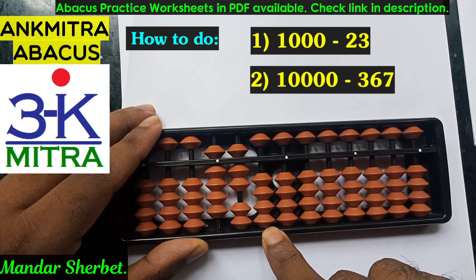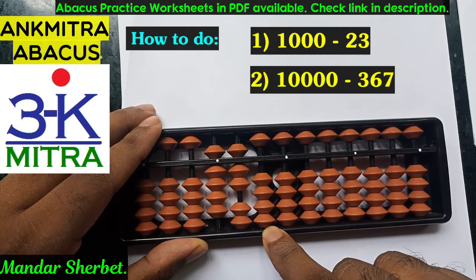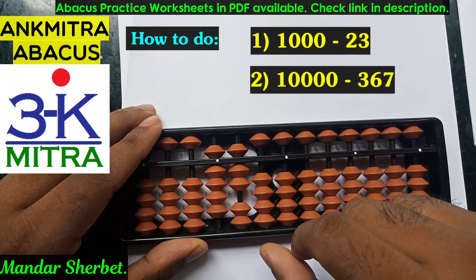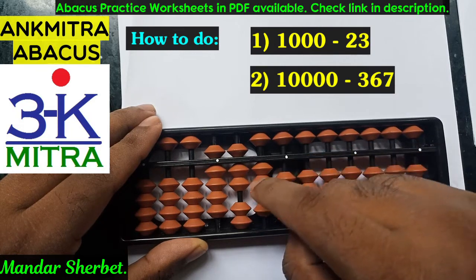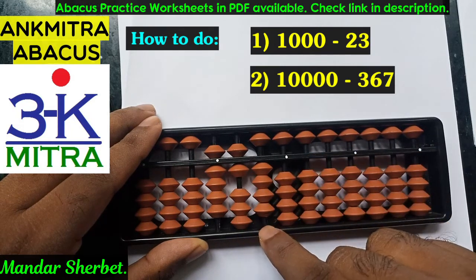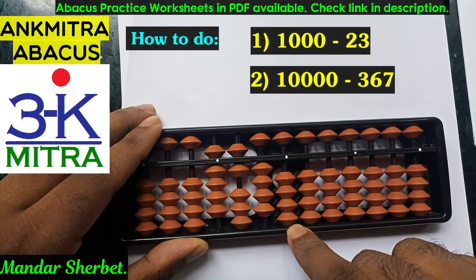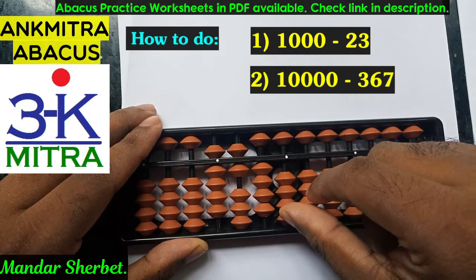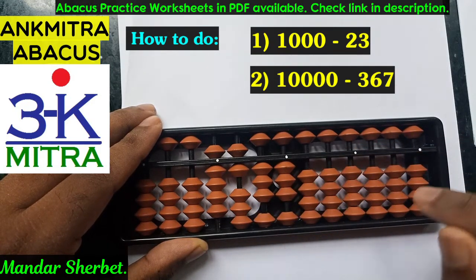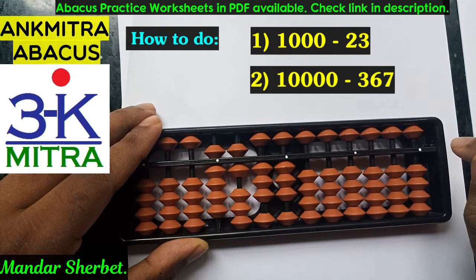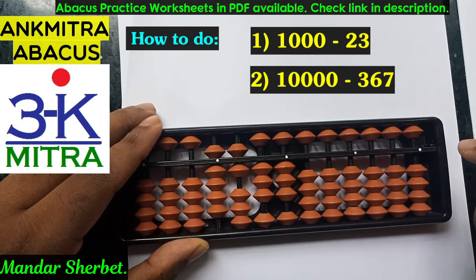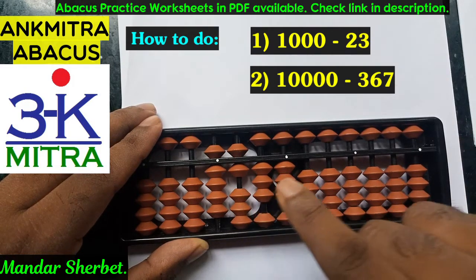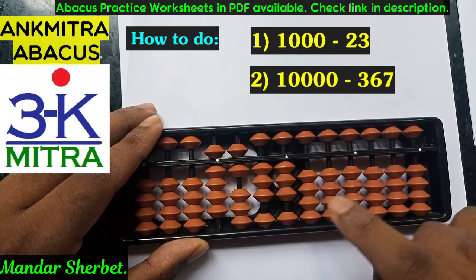Coming to the 10s place, we need to subtract 6 here. The big friend formula is plus 4 minus 10. Then on the units place, subtraction of 7 is to be done, for which we will do plus 3 minus 10. So the subtraction of 367 from 10,000 is done. The answer that we have is 9633.